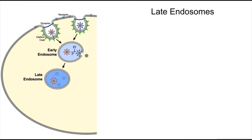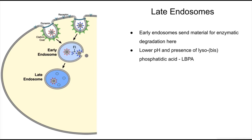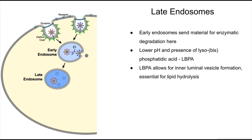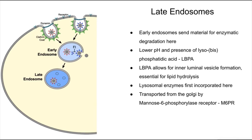Located nearer the nucleus, late endosomes are the next destination of vesicles containing materials sent from the early endosome for degradation. They differ from early endosomes by their lower pH, which is roughly 4.6, and by the presence of LBPA, or lyso-bisphosphatidic acid. LBPA is required for hydrolysis of lipids since it enables the formation of inner luminal vesicles. Lysosomal enzymes are also first transported here from the Golgi by the mannose-6-phosphate system. This system involves mannose-6-phosphate receptor association to the hydrolytic enzymes and transport to the late endosome. Once arrived, the acidic pH causes the mannose-6-phosphate receptor to dissociate, and this in turn activates the enzyme.